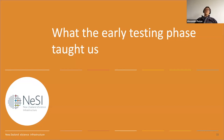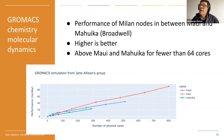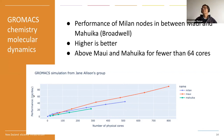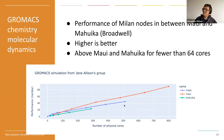We had a testing phase where we handed the machine over to a number of users and asked them to report back. Starting with a chemistry code — GROMACS — which is one of the biggest user communities at NeSI. The performance metric is nanoseconds of simulation time per day, so higher is better. The red line is Maui, which is still unsurpassed except at the low end. Milan, the new Mahuika Extension, sits in between Mahuika and Maui.